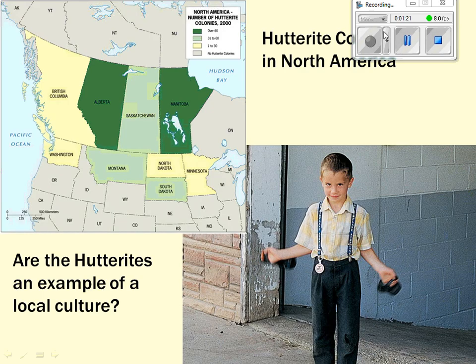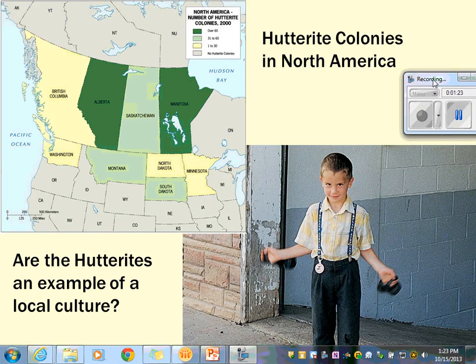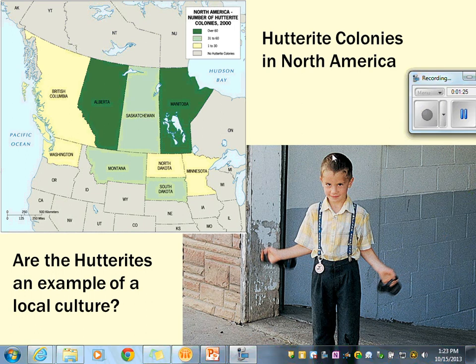The Hutterites are discussed quite a bit in this chapter, and we did a discussion about them as well. The Hutterites are an example of local culture. They live remotely and separately. The men tend to look very similar, the women tend to look very similar. They wear more traditional dress, they try to keep pop culture out, and they've remained this way for a while — very little change over time.